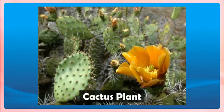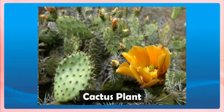Photosynthesis takes place mainly in the leaves of plants. In some plants, however, photosynthesis also takes place in other parts, such as green stem and green branches. The green stem and green branches can do photosynthesis because they contain chlorophyll. Those stems and branches which are green in color can do photosynthesis.